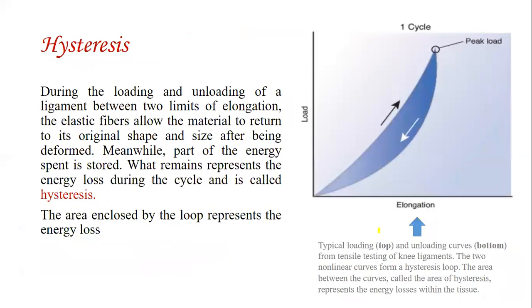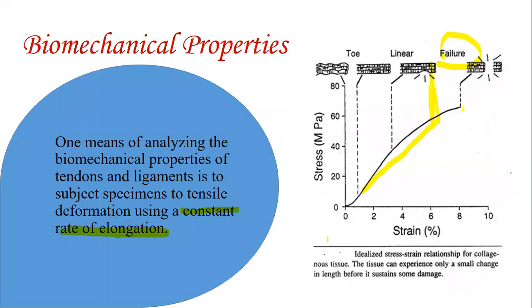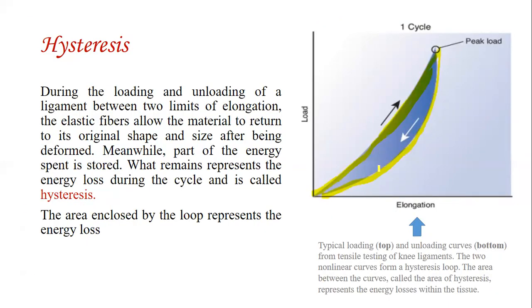Hysteresis is the repetition of loading and unloading. We have two non-linear curves: the loading curve and the unloading curve. The area between the two curves is called the area of hysteresis and represents energy loss. When we load the tendon or ligament, energy is spent, but not all is recovered when we unload, because some energy is lost. This repetition of loading and unloading that causes energy loss is called hysteresis.